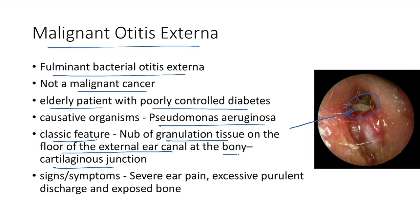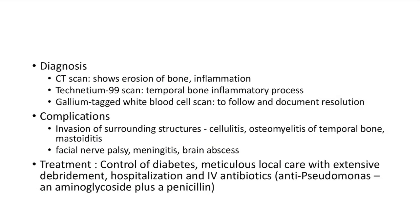Signs and symptoms of malignant otitis externa include severe ear pain, excessive purulent discharge, and exposed bone. Diagnosis: CT scan shows erosion of bone and inflammation; Technetium-99 scan shows temporal bone inflammatory process; Gallium-tagged white blood cell scan is used to follow and document resolution of malignant otitis externa.